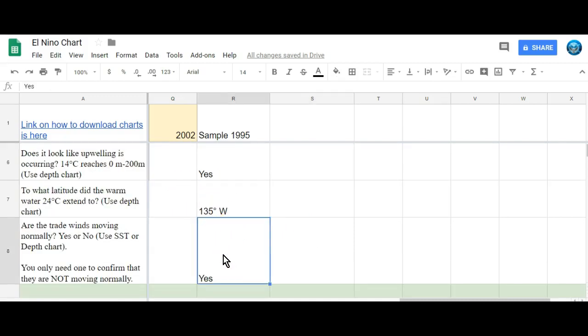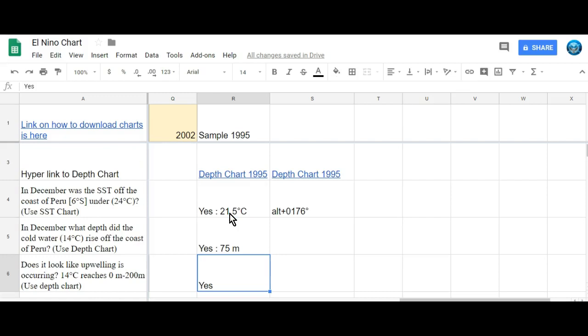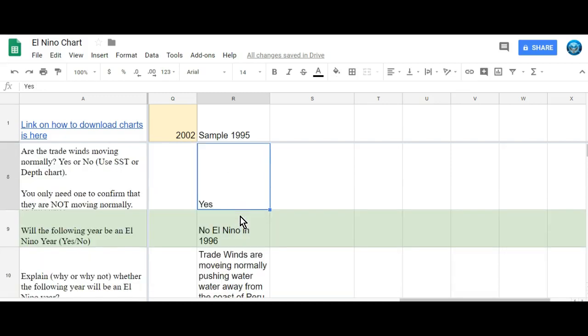Now, are the trade winds moving normally? So if I look here, is upwelling occurring? Did it get up between 0 to 200 meters? Did it extend upwards? Yes. So upwelling is occurring. What about on the sea surface temperature? Did that cold water appear off the coast of Peru? So is it under 24 degrees Celsius? Yes. That means that upwelling is occurring. So I could say that, yeah, the trade winds are moving normally. Trade winds are moving normally because water is being pushed away from Peru. Upwelling is occurring.